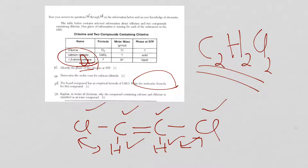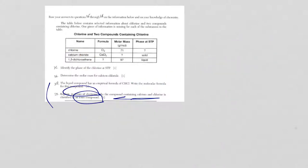Alright, let's take a look at 28, which is the reason why I had all these questions here to begin with. It says, explain in terms of electrons why the compound containing calcium and chlorine is classified as an ionic compound. Alright, so, calcium and chlorine or calcium chloride.